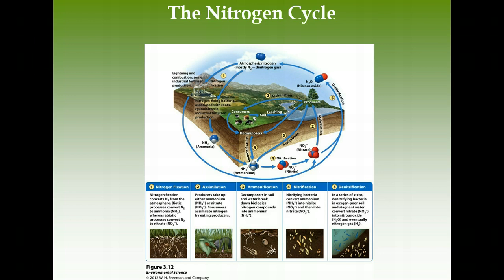Once producers assimilate nitrogen as ammonium or nitrate, consumers obtain it by eating the producers. When producers and consumers die and decompose, ammonification occurs — decomposers break nitrogen compounds down into ammonium. Then nitrification converts ammonium → nitrite → nitrate via bacteria. Any time there's nitrification or nitrogen fixation, bacteria are involved. Bacteria are probably the most important organisms in the nitrogen cycle.